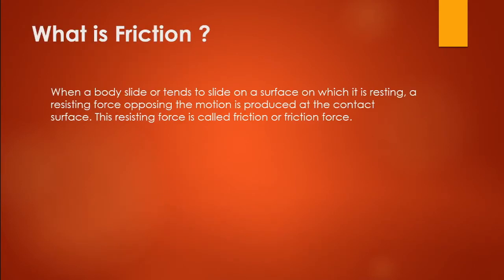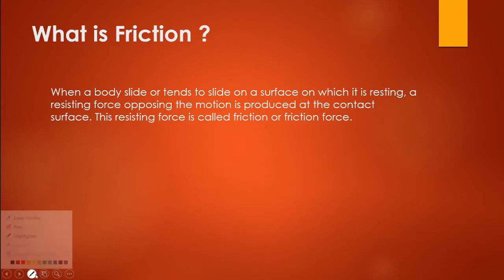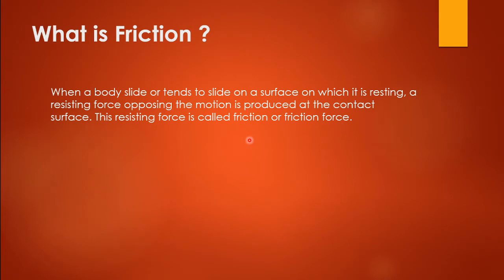What is friction? When a body slides on a surface, or tends to slide on a surface, the surface gives an opposite force to the body at the angle of contact. That opposite force which resists the motion of the body is called friction or frictional force. When a body slides or tends to slide on a surface on which it is resting, a resisting force opposing the motion is produced at the contact surface — this is called friction.